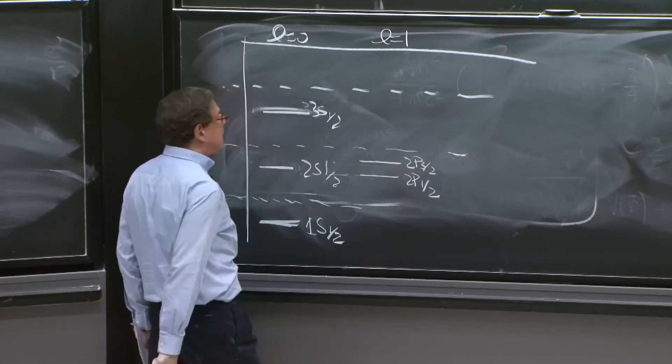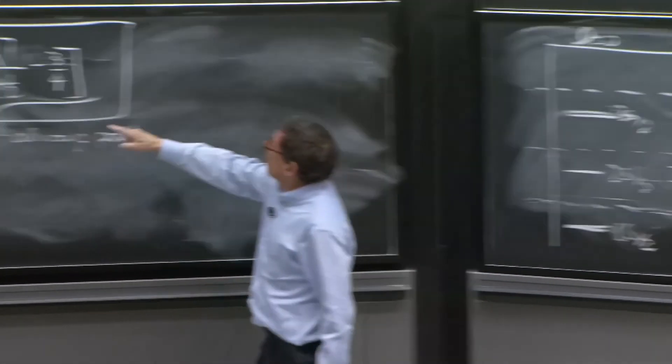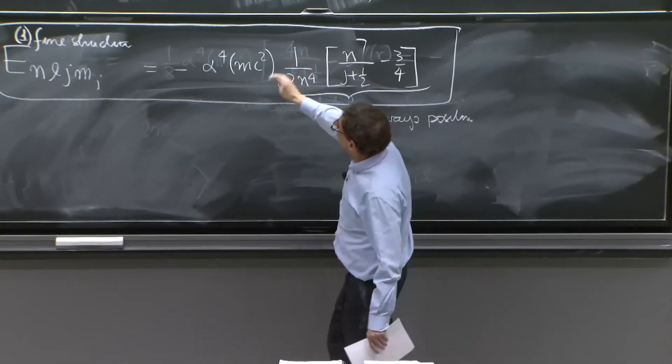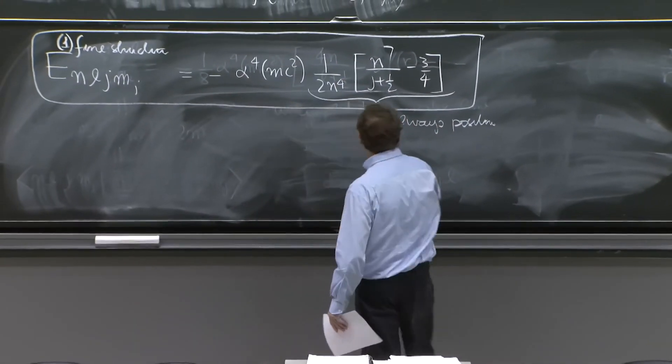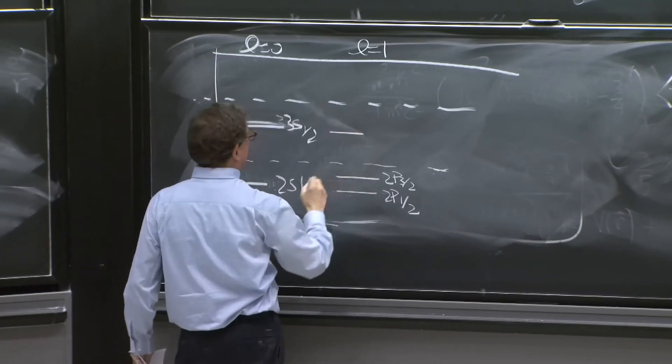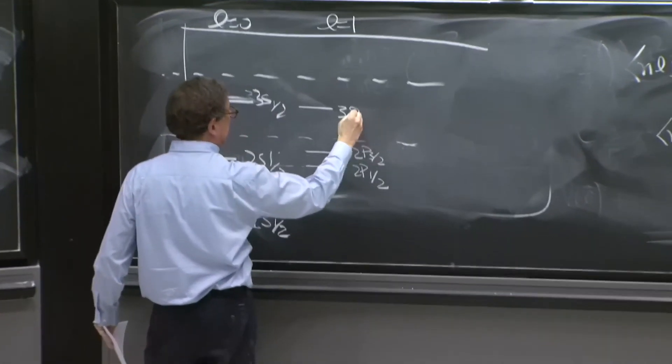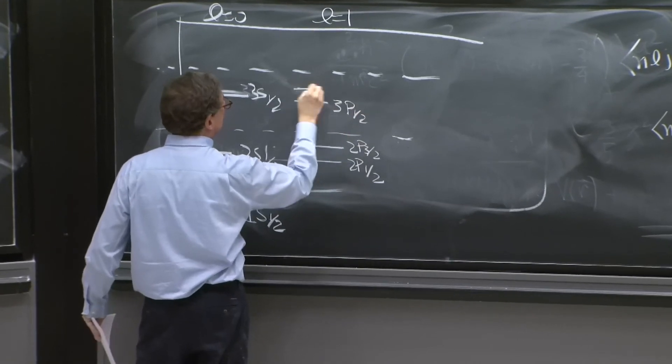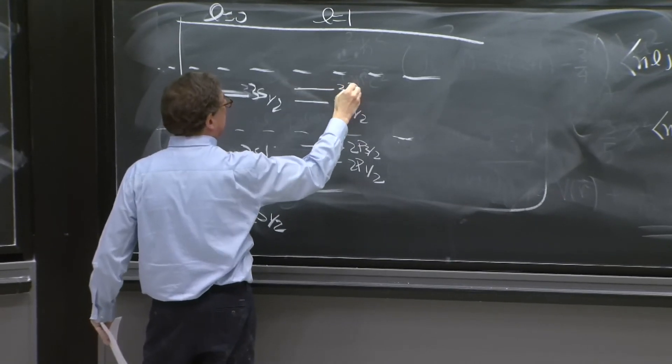2p 3 halves has a higher j. Therefore, it has a smaller number. So it's lowered less. And it appears a little higher. So here you would have 3p 1 half and here 3p 3 halves.